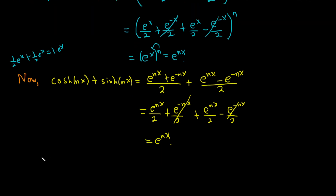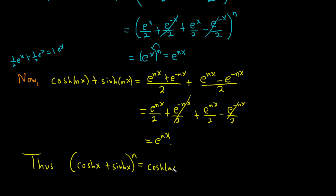Thus, if you take cosh of x plus sinh of x and raise it to the nth power, you get cosh of nx plus sinh of nx. Pretty cool identity. And that completes the proof — kind of a fun problem. This is from an old calculus book I have from the 80s. I hope this video has been helpful to someone out there. Good luck.